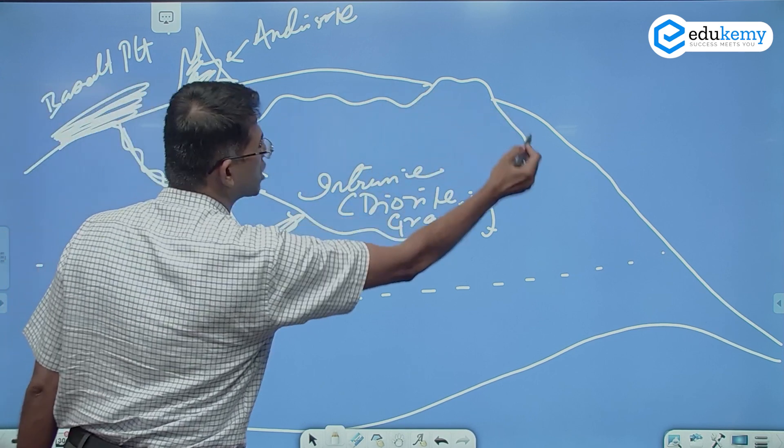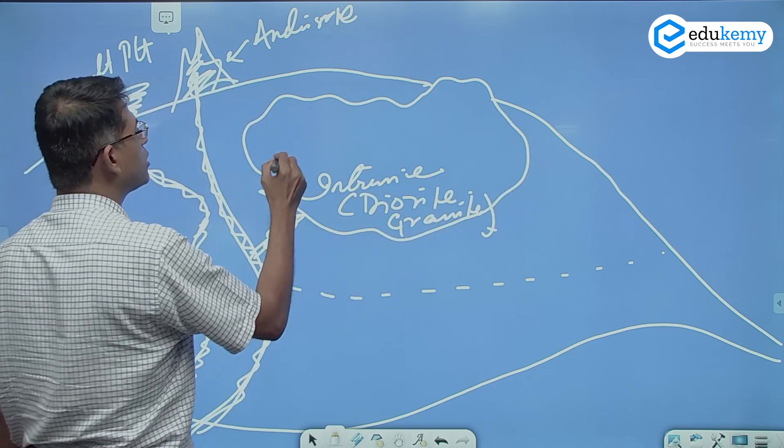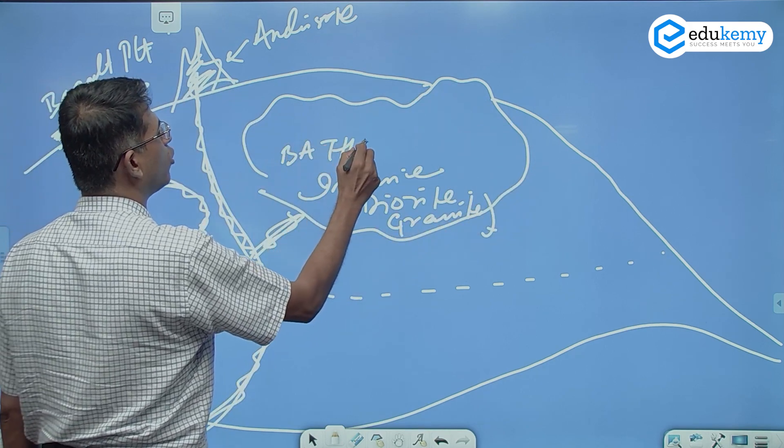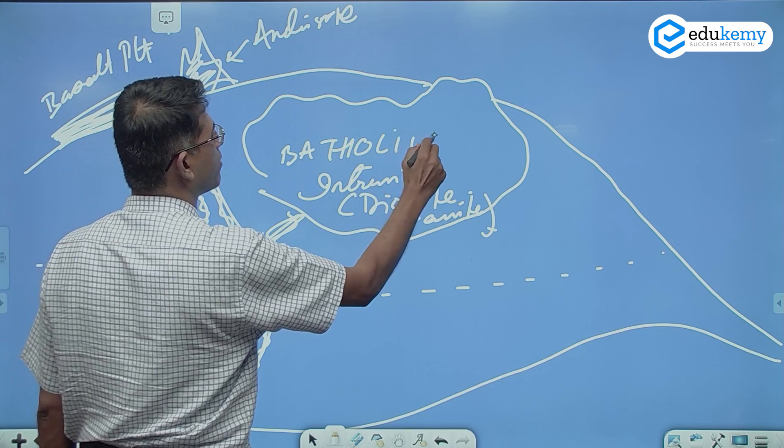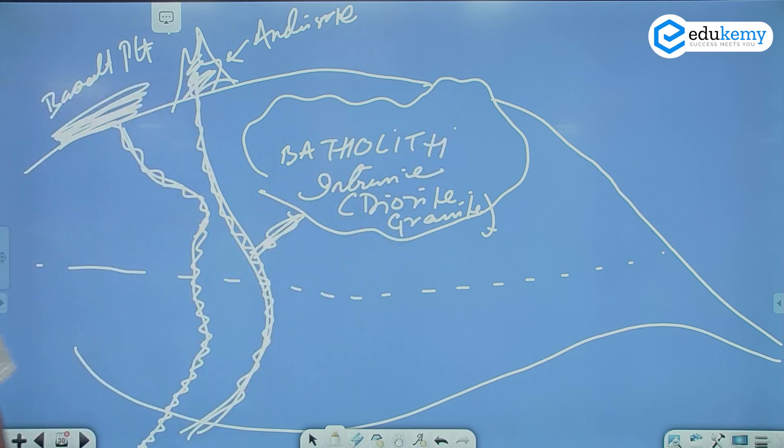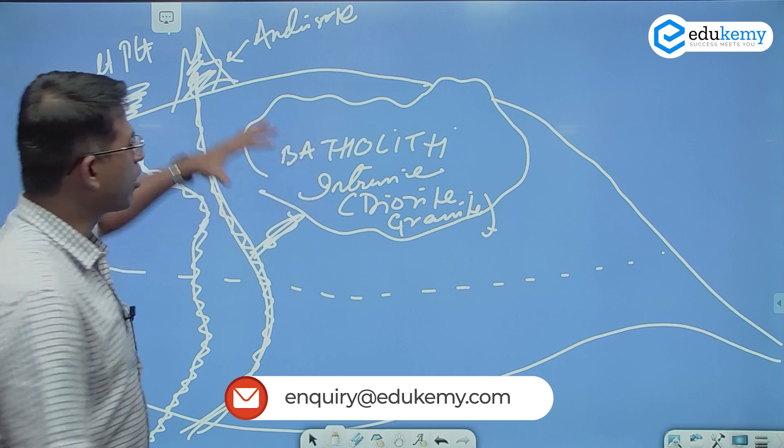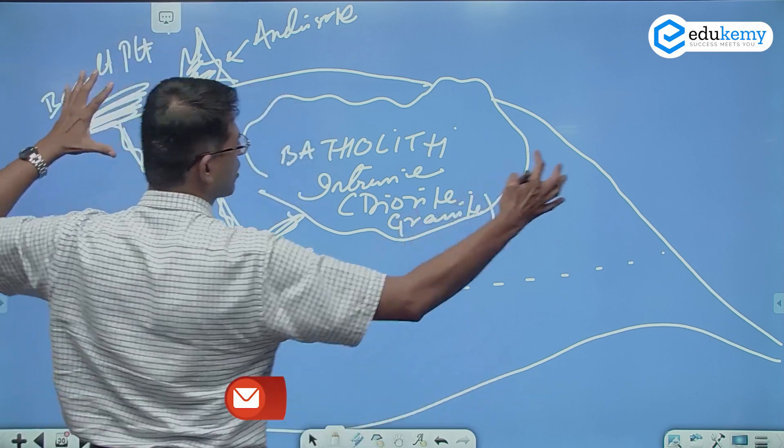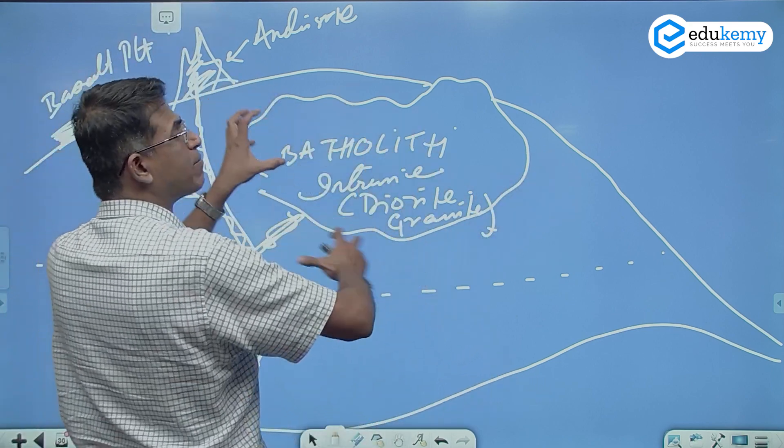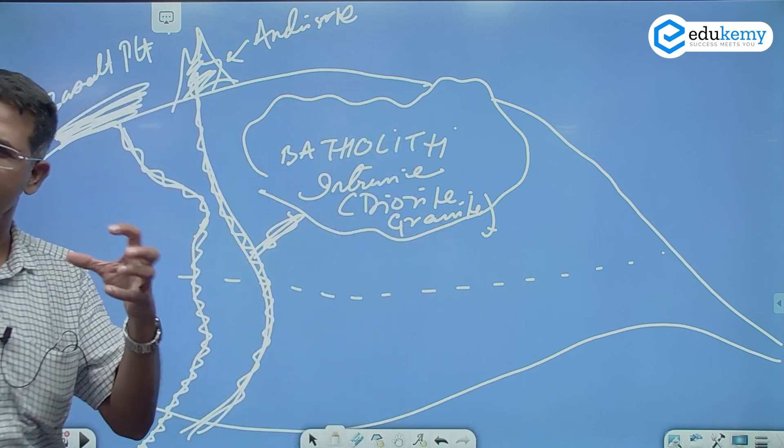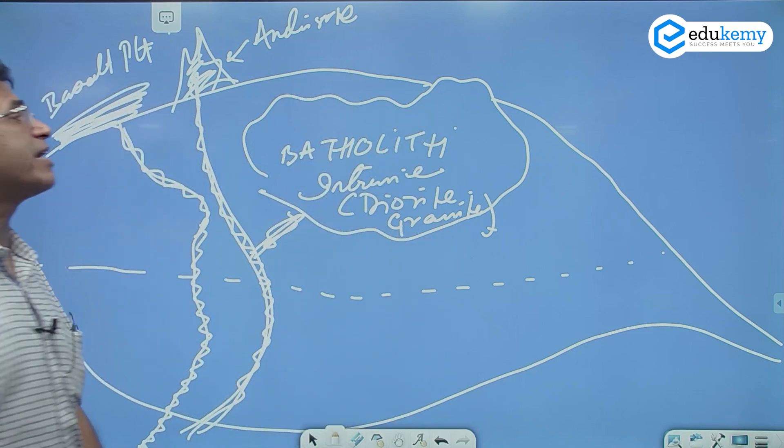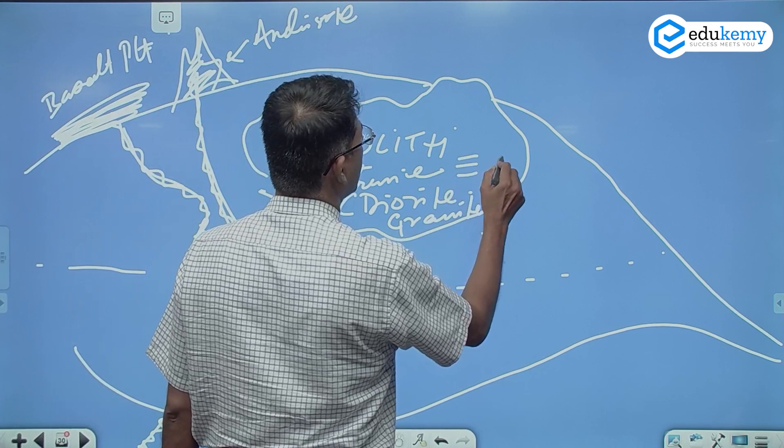This massive formation. This is what's called as Batholith. I am sure you have heard this name. Now what happens is over millions and millions of years, this Batholith, because of pressure, because of temperature, the whole thing can get metamorphosed, becomes very, very hard. Then it is called as a Craton.